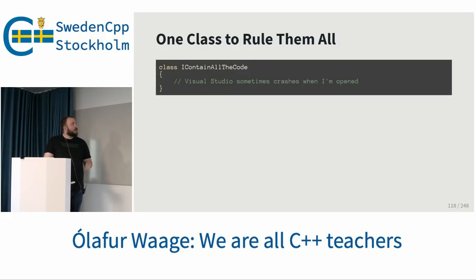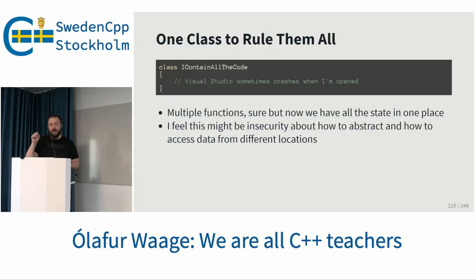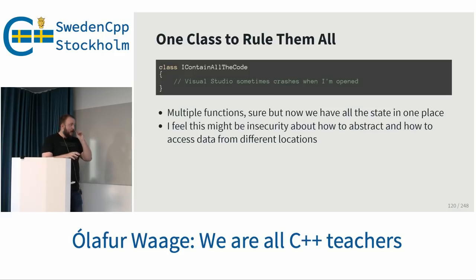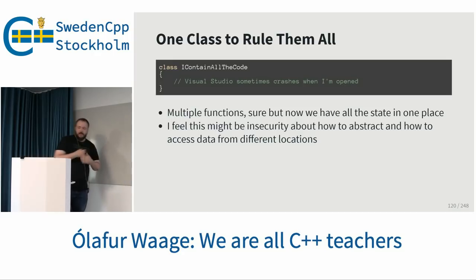One class to rule them all: I contain all the code, and Visual Studio sometimes crashes when it opens — so much code. Now we have multiple functions but all the state is in one place. I think this is insecurity about how to abstract, mainly about how to access data from another location. You have your class, your state, and then you want to store data somewhere else — you might be insecure about where to put it, so you just keep it all with you.